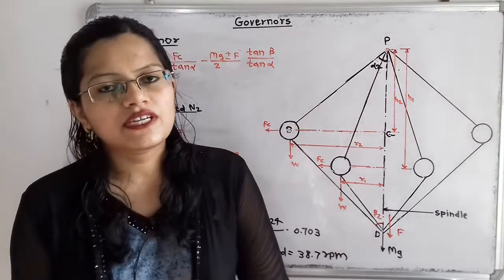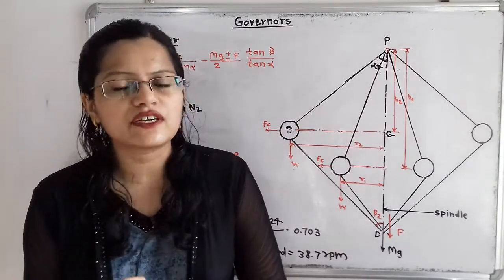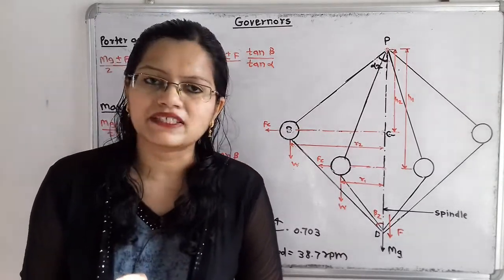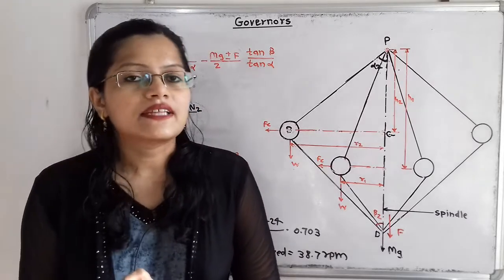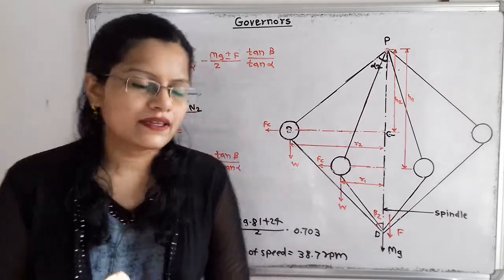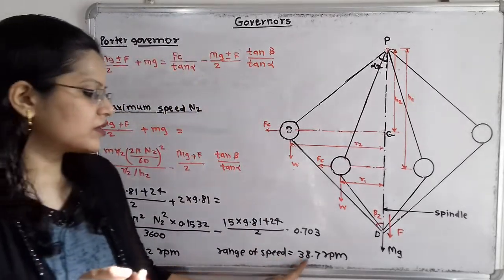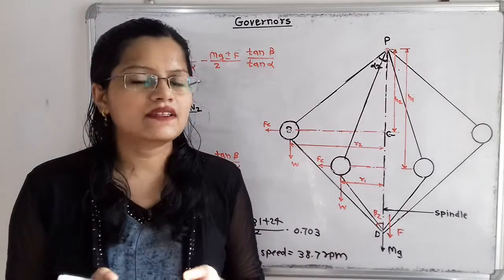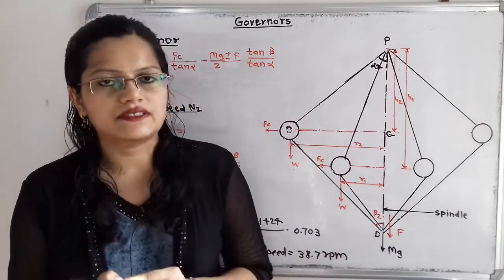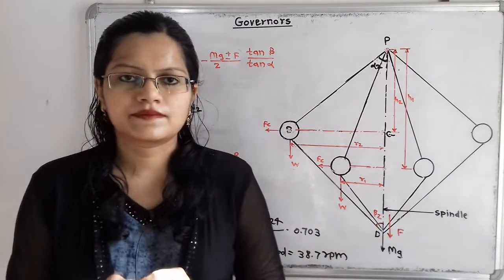The range of speed is the difference between maximum speed and minimum speed: N2 − N1 = 222 − 182.47 = 38.7 RPM. This is the answer. Thank you.